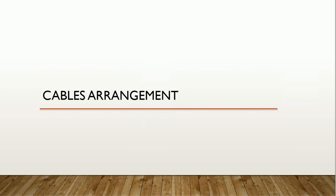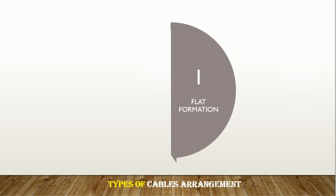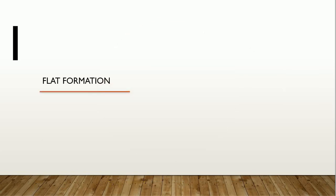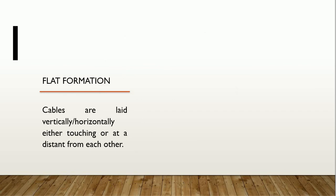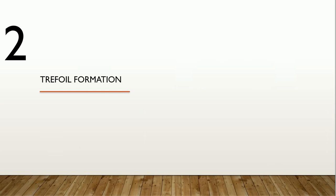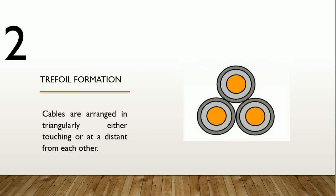In the next slide, we'll talk about cable arrangement. Cables are arranged in two different formations: flat formation and trefoil formation. Flat formation means cables are laid vertically or horizontally, either touching or at a distance from each other. While trefoil formation, the cables are arranged triangularly either touching or at a distance from each other, similar to this diagram.